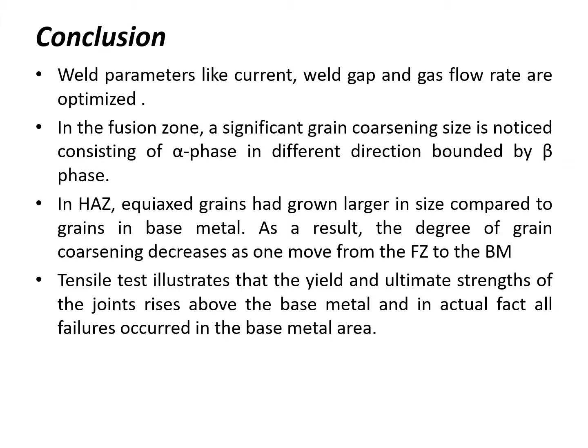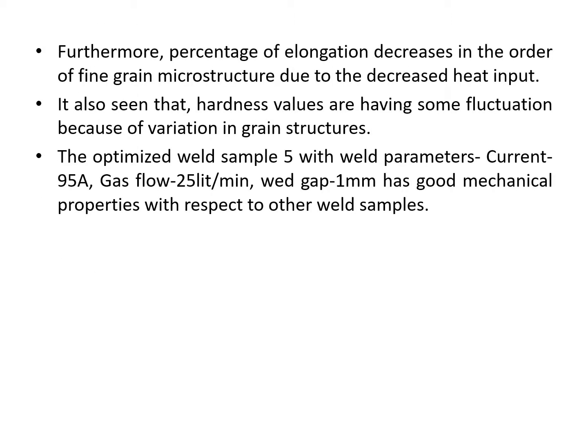In tensile analysis, the yielding and ultimate tensile strength of the joints rise above the base metal, and in fact all failures occurred in the base metal area. Furthermore, the percentage of elongation decreases in the order of fine grain microstructure due to decreased heat input. It was also noticed that hardness values vary with some fluctuation due to variation in the grain structure. The optimized weld sample 5, with process parameters of current 195 ampere, gas flow rate of 25 liters per minute, and weld gap of 1 mm, has the best mechanical performance with respect to the other weld samples.